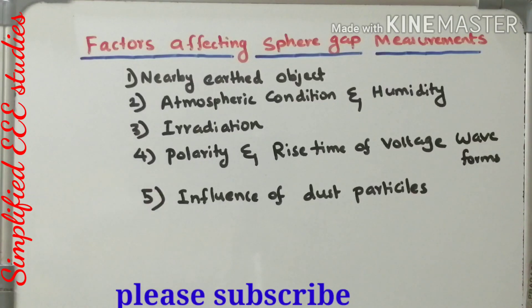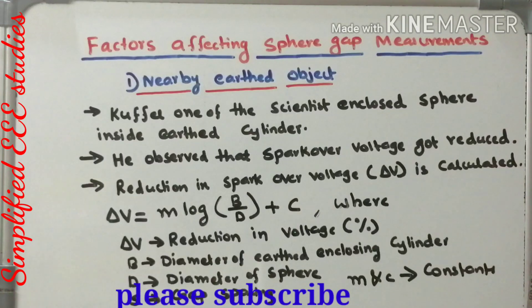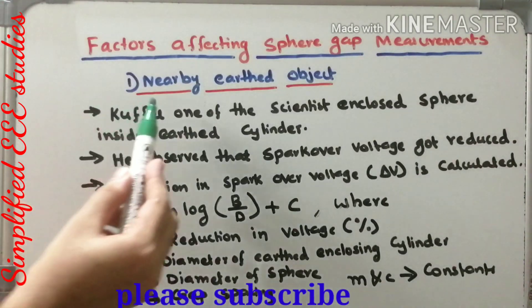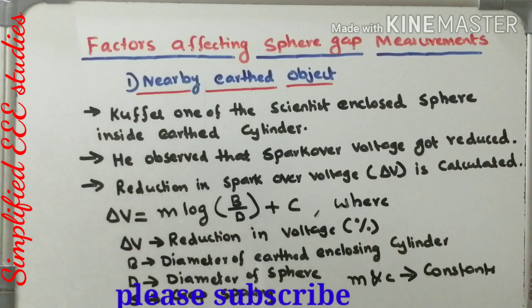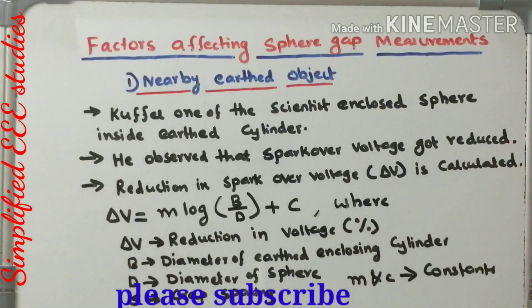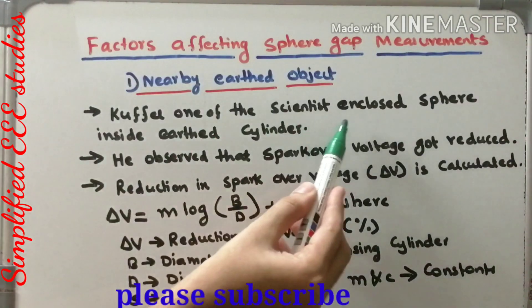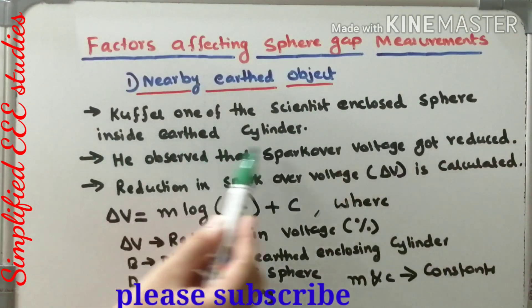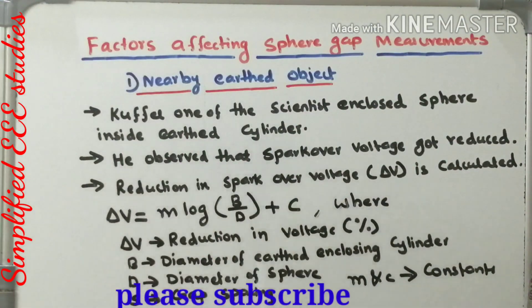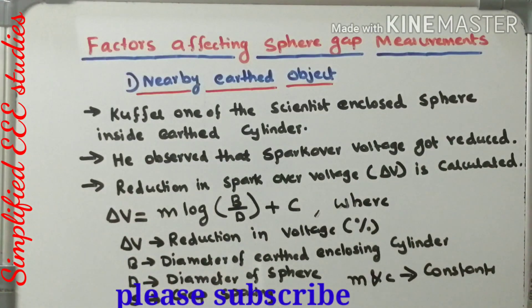Let me explain how those factors directly influence Sphere Gap Measurement. Now let's discuss one of the important factors — Nearby Earth Object. Kufel is one of the scientists who did a detailed study on this matter. Kufel enclosed the Sphere Gap measurement in an Earth Cylinder. He observed that the spark over voltage got reduced because of the nearby Earth Object.